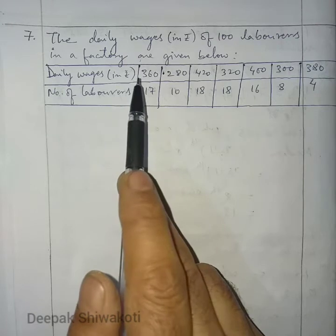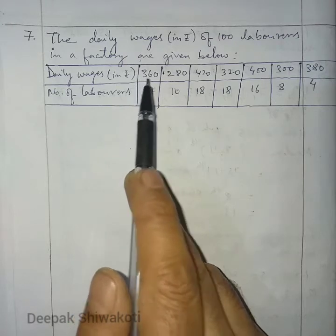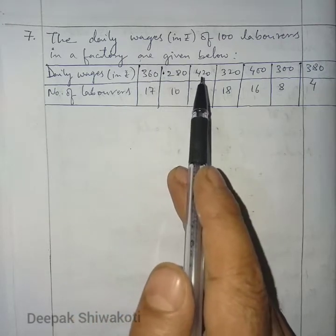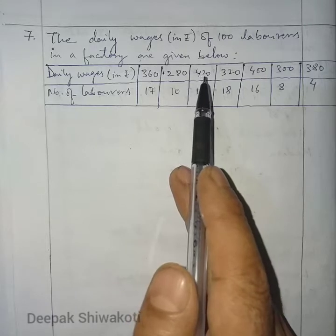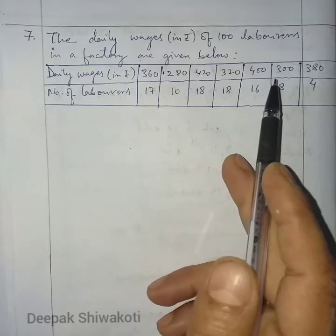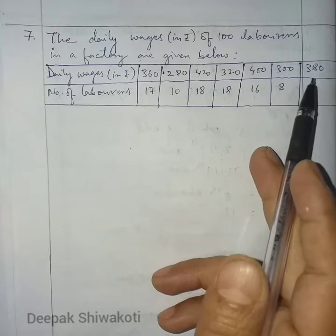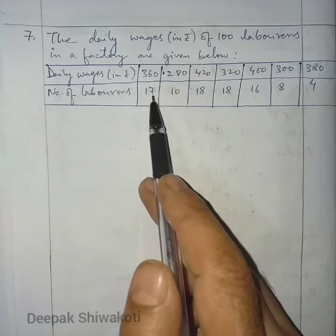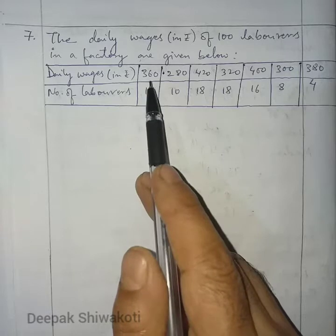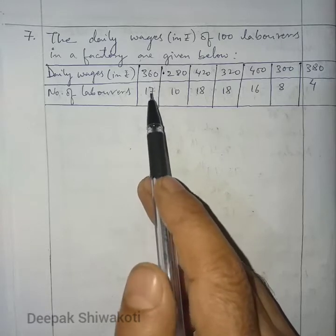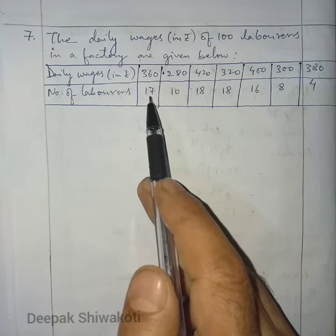Here are the daily wages: 360, 280, 420, 320, 400, and so on. The number of laborers for each wage is also given. For 360 rupees, there are 17 laborers.